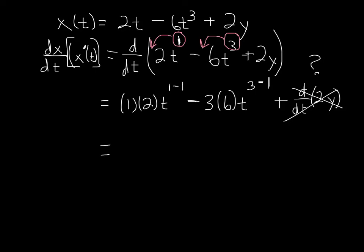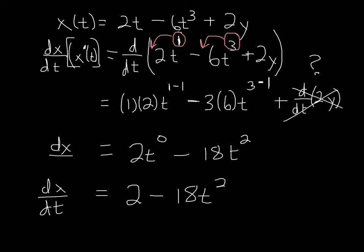And now I can just write this out a little bit better, multiply things together. 2 times 1 is 2. t to the 1 minus 1 is 0, minus 3 times 6 is 18. t to the 3 minus 1, 3 minus 1 is 2. And to simplify this just a little bit more, t to the 0 is equal to 1. So that leaves me with just a 2 minus 18t squared. And I get my final derivative, dx dt. All using nothing but the power rule.